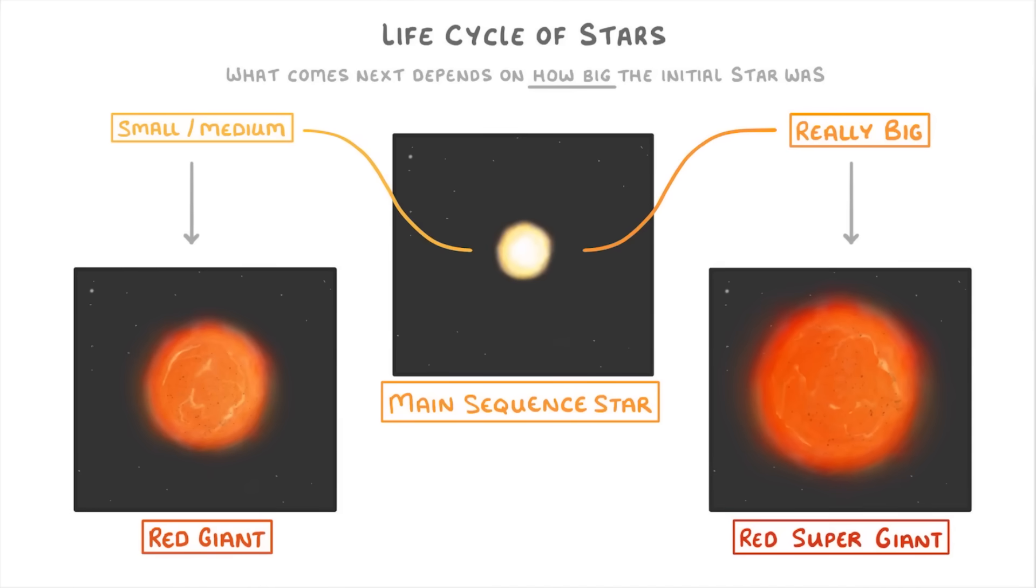Each of these two types complete the rest of their life cycles in different ways. So we're going to take a look at the red giant first, and then we'll come back to the red supergiant.